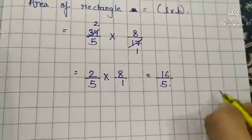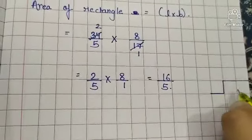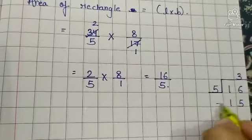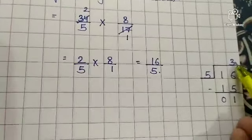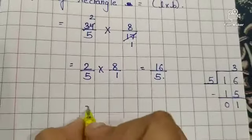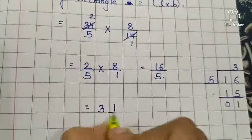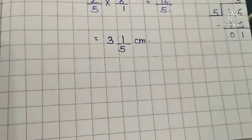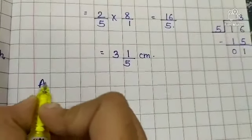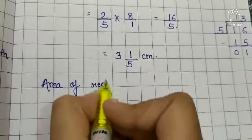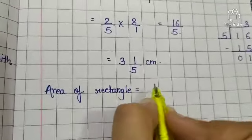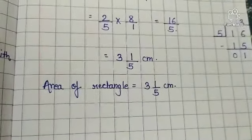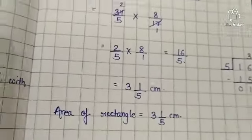We will change 16 upon 5 into a mixed fraction. Solve here: 16 divided by 5 — 5 threes are 15, subtract to get remainder 1. So quotient remainder upon divisor gives us 3 and 1 upon 5 cm. The area of the rectangle is equal to 3 and 1 upon 5 cm squared. Alright, complete this question.